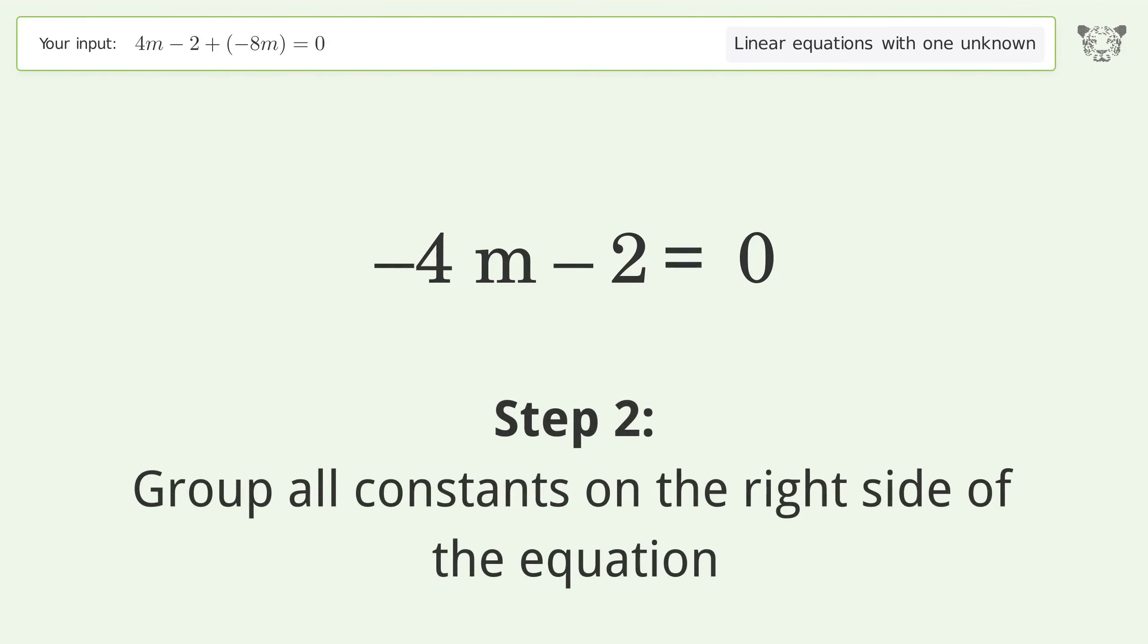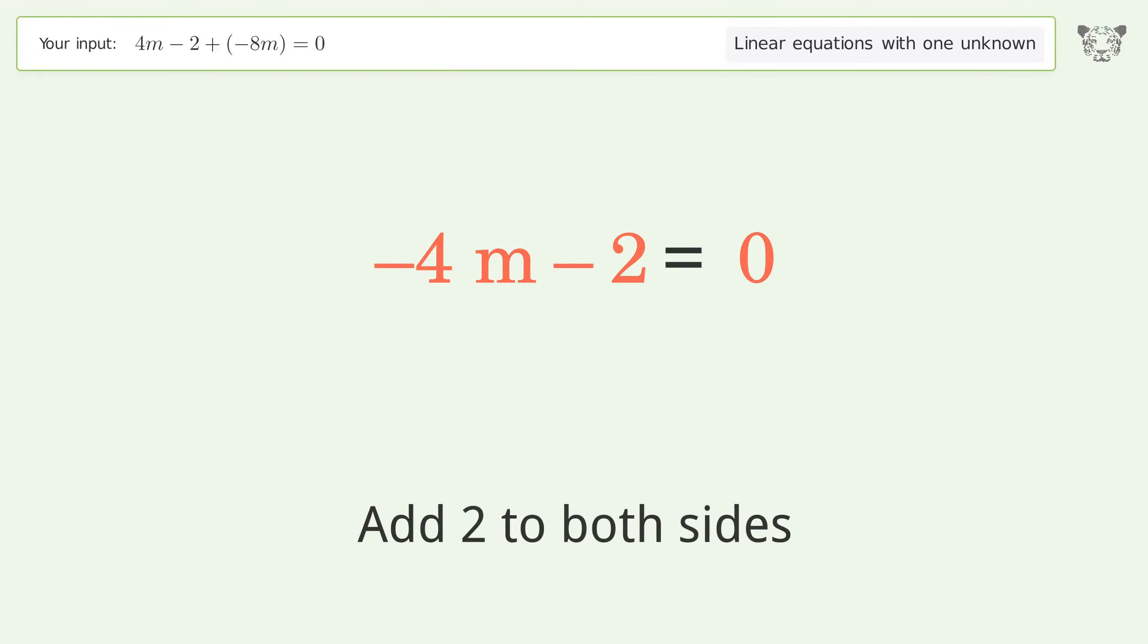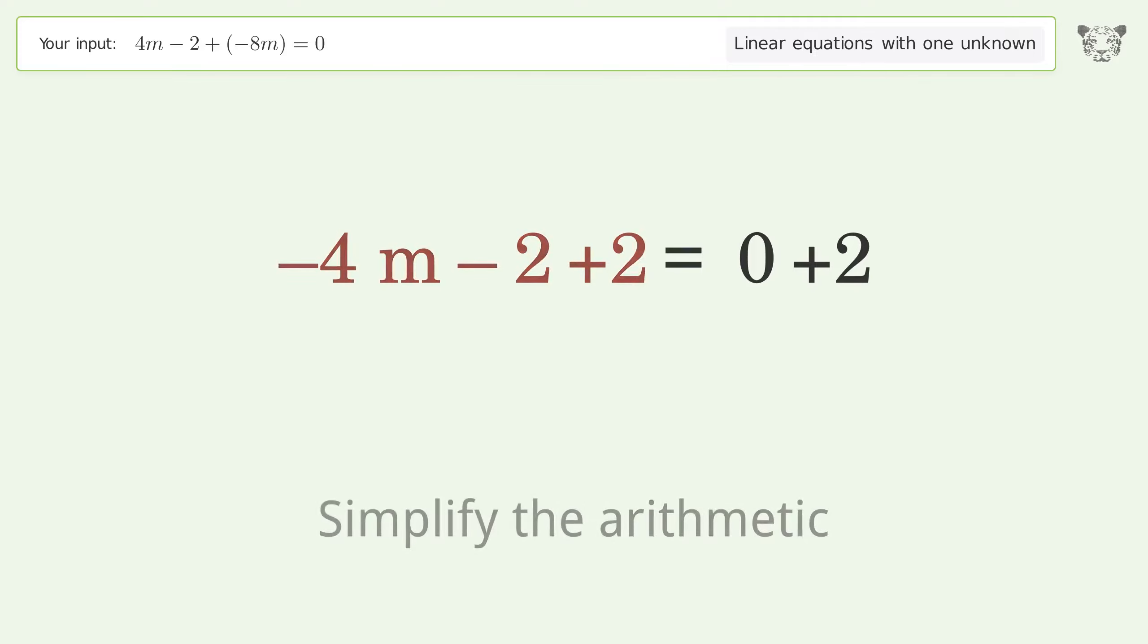Group all constants on the right side of the equation. Add 2 to both sides. Simplify the arithmetic.